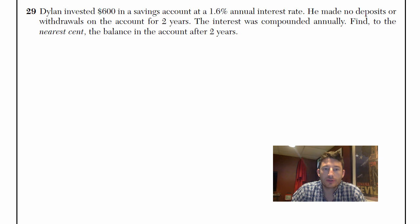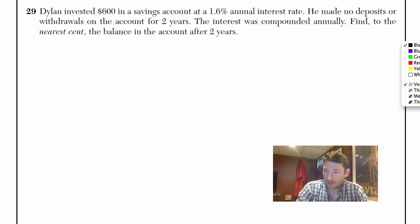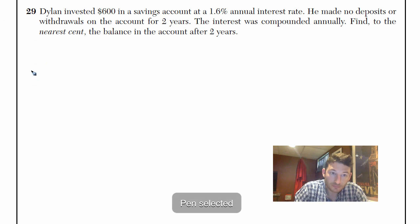He made no deposits or withdrawals on the account for two years. The interest was compounded annually. Find to the nearest cent the balance in the account after two years. You can memorize equations for it, but really I'll just show you the steps.